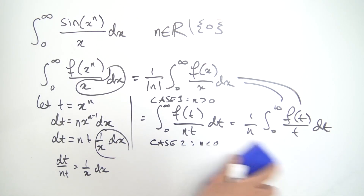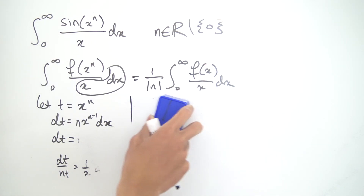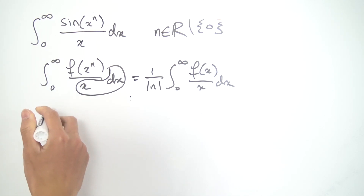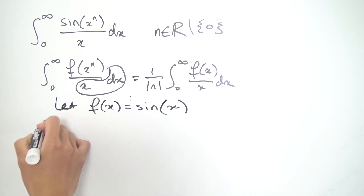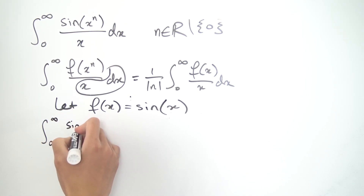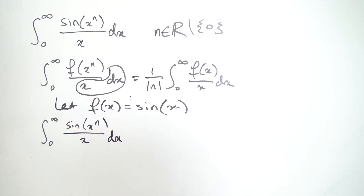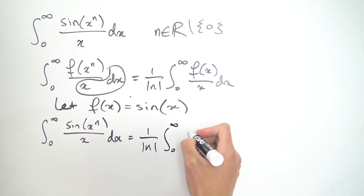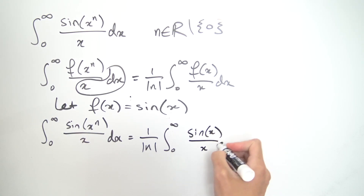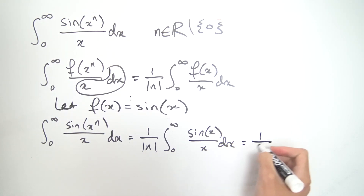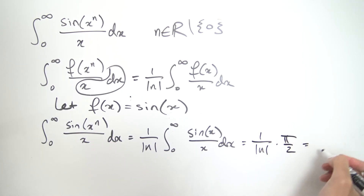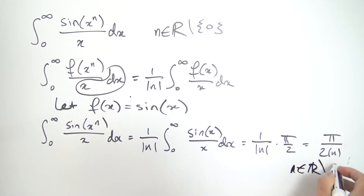With that identity proved, solving our original integral is easy. We let f of x equal sine of x, and we get that the integral from 0 to infinity of sine of x to the n over x dx equals 1 over the absolute value of n times the integral from 0 to infinity of sine of x over x dx. We know that integral equals pi over 2, so in the end we get 1 over the absolute value of n times pi over 2, or equivalently pi over 2 times the absolute value of n, where n is any real number excluding zero.